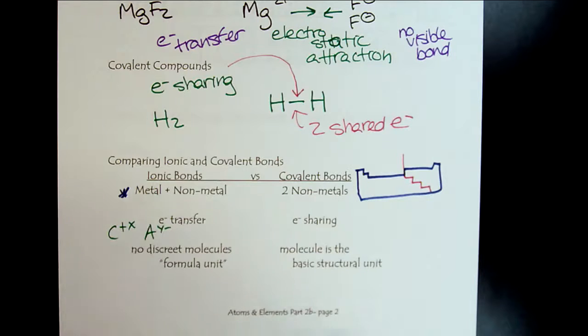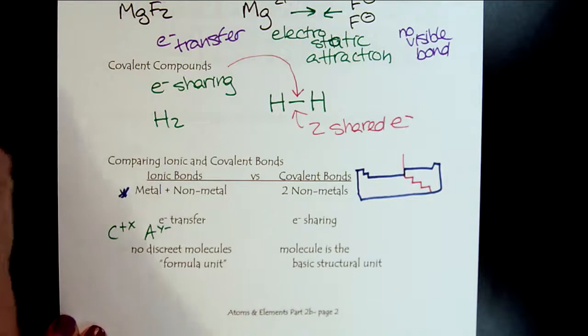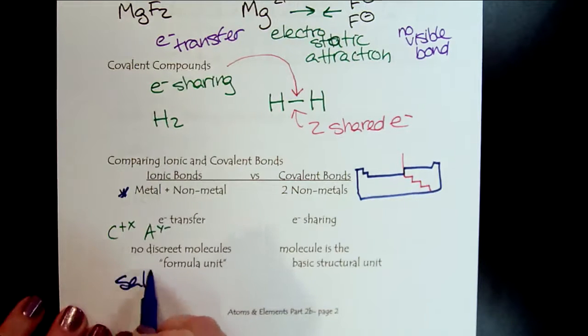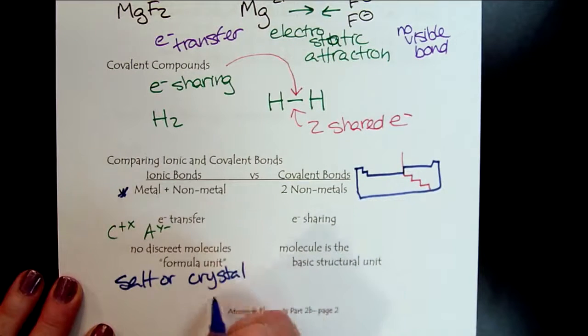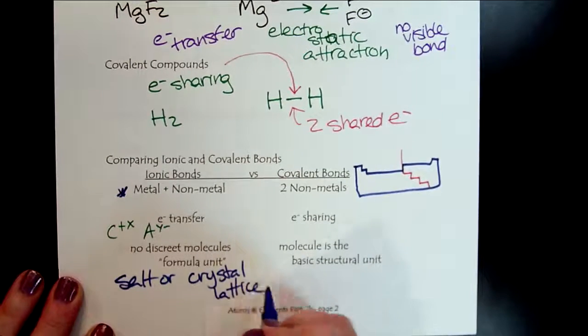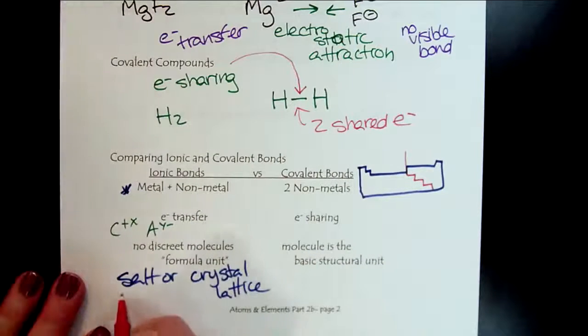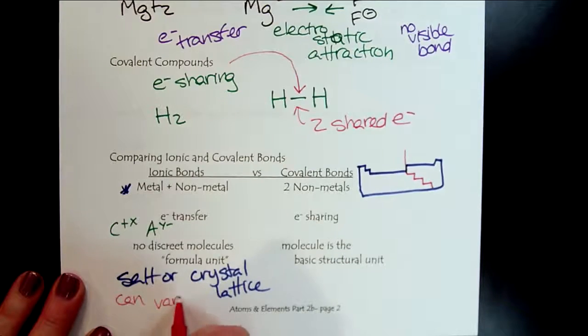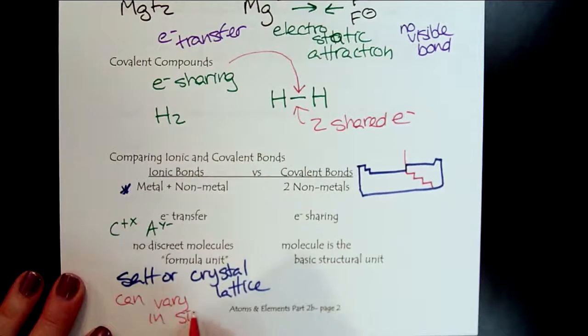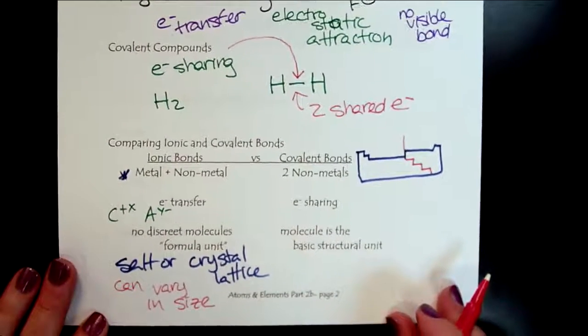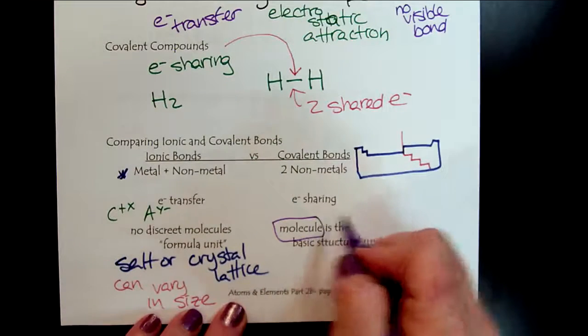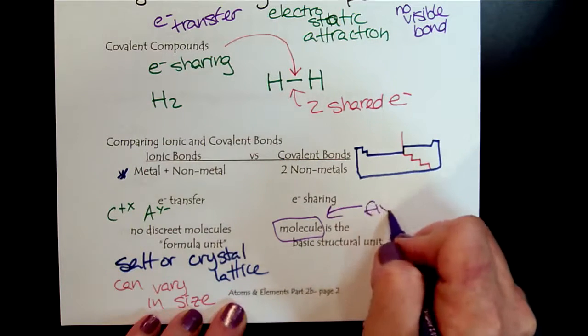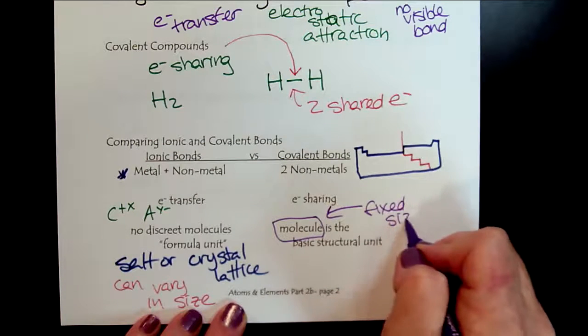We have little crystals of salt or big crystals of salt. Those are ionic compounds. There's no discrete molecule. So we call these salts, or we talk about the crystal lattice. And they can vary in size. But a molecule has a beginning and an end. It has a fixed size.